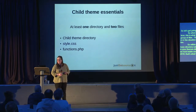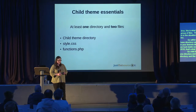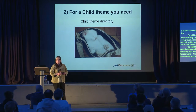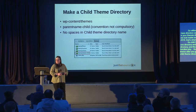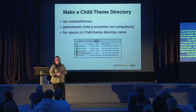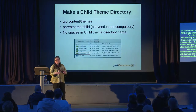Child theme essentials: you need at least one directory and two files. You need a child theme directory, and your two files are style.css and functions.php. The second thing you need after your parent theme is a child theme directory — somewhere to keep your files. You put it in WP content with your other themes. The naming convention is to name it the parent theme name dash child. It's not compulsory, but the important thing is that you don't have any spaces in the theme name.